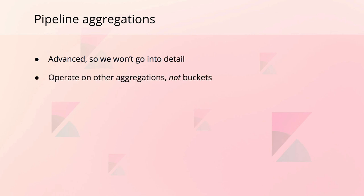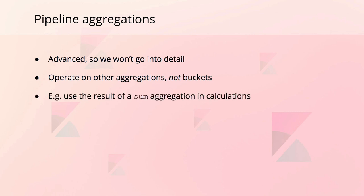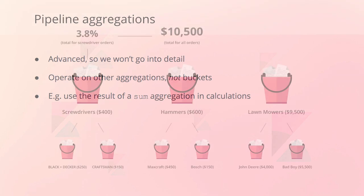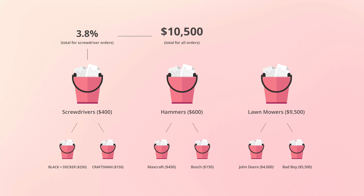The third category of aggregations, being pipeline aggregations, is a bit more advanced, so I won't go into too much detail. Pipeline aggregations don't operate on document sets as bucket and metric aggregations do. Instead, they operate on the outputs produced by other aggregations. An example could be to calculate how many percent of the order totals comes from screwdrivers. Doing so, we would use the output of two other aggregations: the sum of order totals and the sum of order totals for screwdrivers.